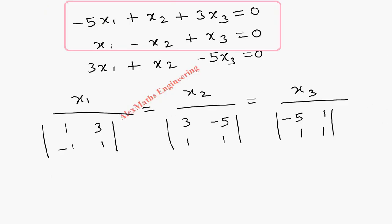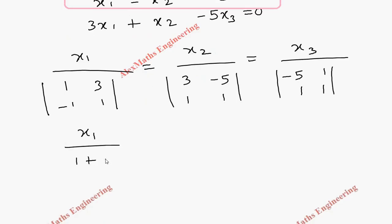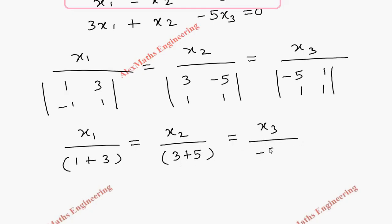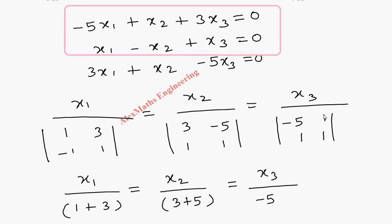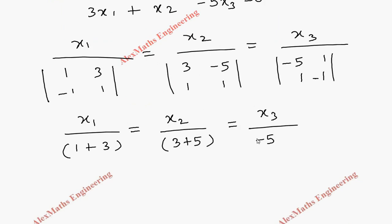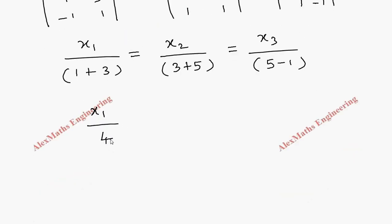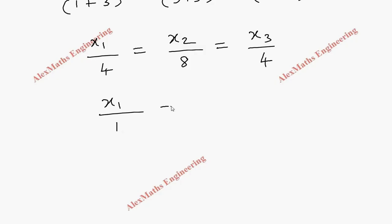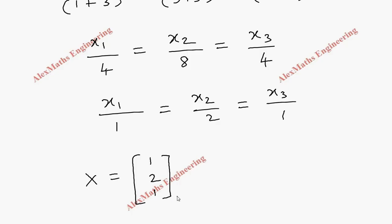Evaluating the determinants: x1 over (1 plus 3) equals x2 over (3 plus 5) equals x3 over (minus 5 minus 1). This gives x1 over 4 equals x2 over 8 equals x3 over minus 6, which simplifies further. Dividing through, the ratio becomes 1, 2, and 1. Therefore the eigenvector corresponding to lambda equals 6 is X3 equals [1, 2, 1].